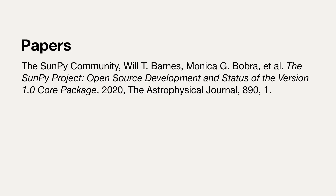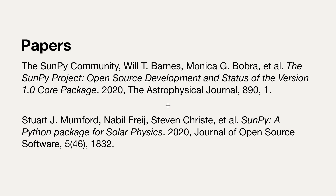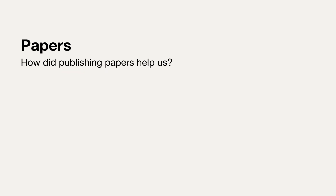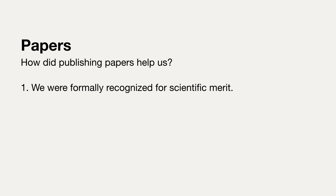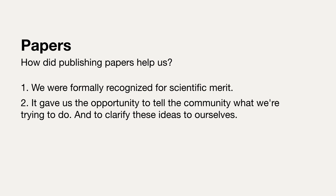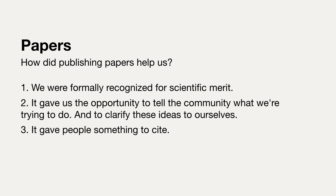On to the second category: papers. This year, we published an open access paper in the Astrophysical Journal to coincide with our version 1.0 release, and we also wrote a companion paper in the Journal of Open Source Software, or JOSS, which is open access by default. This gave us visibility for a lot of reasons: two peer-reviewed journals formally recognized us for having scientific merit; it gave us the opportunity to tell the community what we're trying to do, which we hadn't fully written down before; and it was a valuable internal exercise in clarifying those ideas to ourselves. And finally, these papers give people something to cite.